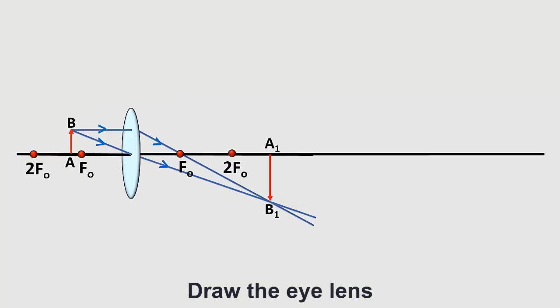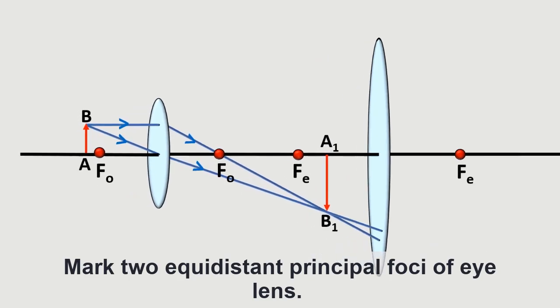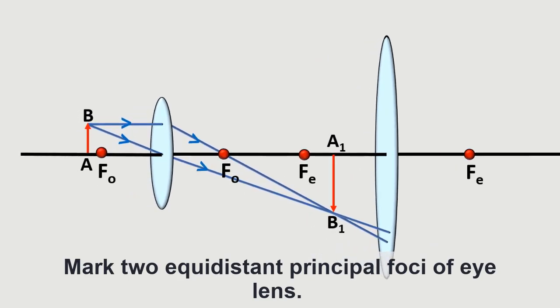Now draw the eye lens near the image A1B1. Mark two equidistant principal foci of the eye lens such that the image is in between FE and the optic center.